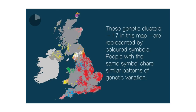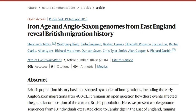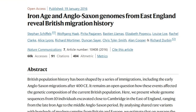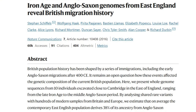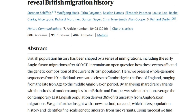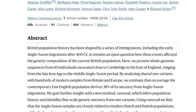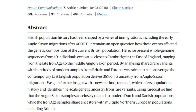We know that the Anglo-Saxons made a lasting impression on the genetics of England. The People of the British Isles study found that large parts of Eastern, Central, and Southern England form a single genetic group with between 10 and 40% Anglo-Saxon ancestry. However, these people also retained DNA from earlier settlers of Britain. Another study published in Nature estimated that on average the contemporary East English population derives 38% of its ancestry from Anglo-Saxon migrations.